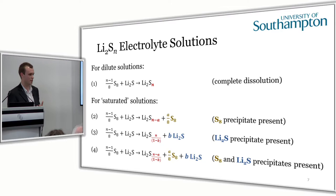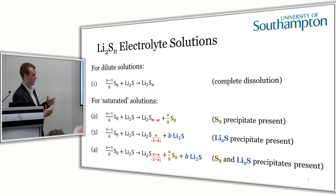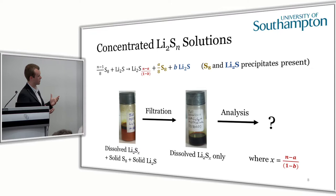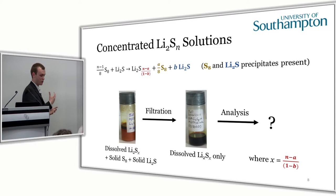The average oxidation state can be thought of like the average polysulfide chain length. To simply explain: if the average sulfur oxidation state is zero, it's just sulfur; if it's two minus, it's lithium sulfide; and 0.5 minus would be approximately Li2S4. We were particularly interested in trying to get to the congruent point — to dissolve no more sulfur into our electrolyte and determine what the average oxidation state was, because we thought this would help us build our phase diagram.